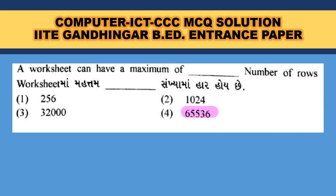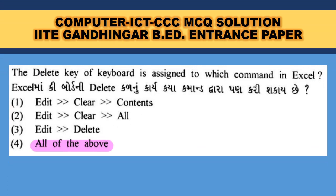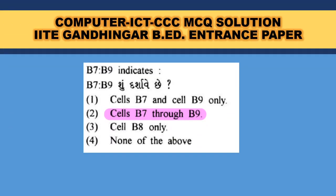A worksheet can have a maximum of 65,536 rows in Excel 2003 version. In Excel 2007 version it is 1,048,576. The Delete key of the keyboard is assigned to which command in Excel? It is all of the above. B7 and B9 indicates a range — cells B7 through B9 is the correct answer.